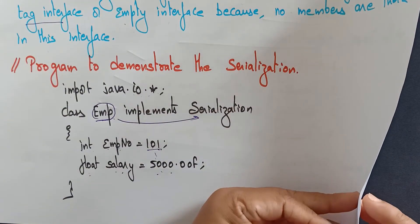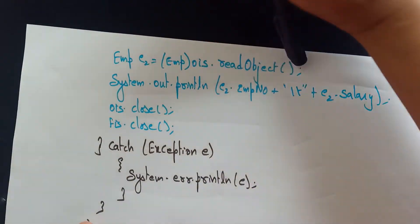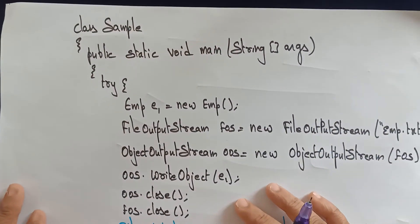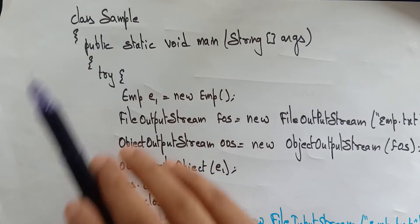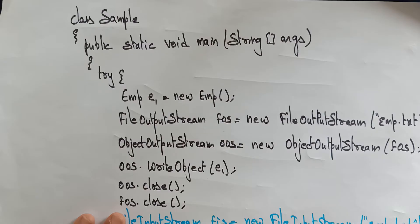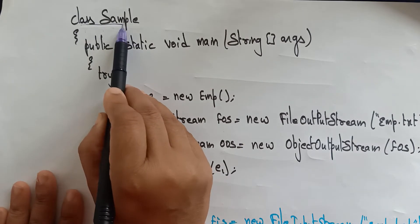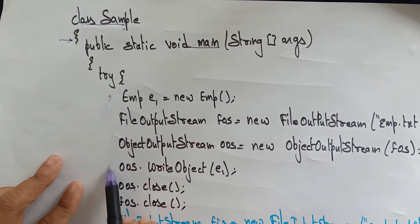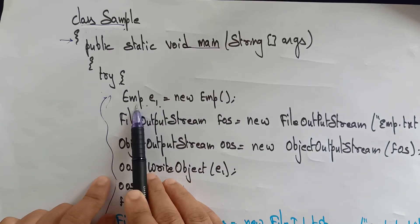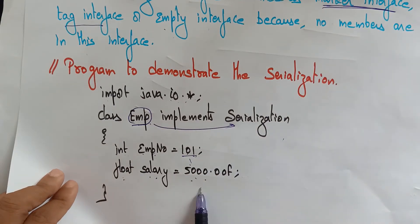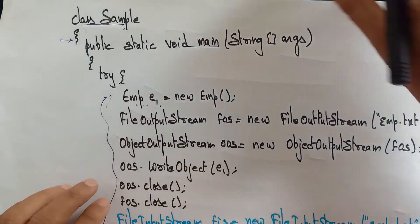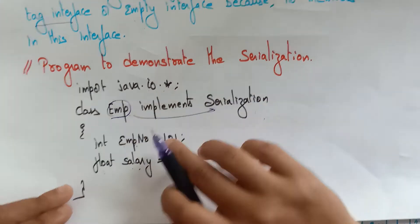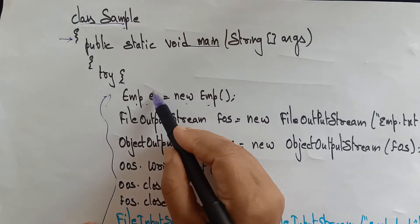So I created class Employee which implements the serialization concept. Now I am creating the main class. A class Sample is created. Class Employee implements Serializable — employee number and salary are initialized. Now class Sample is loaded. While compiling the program, class Sample is loaded, the main method is called, and we enter into the try block. The task is: Employee is the class I already created which implements Serializable. I am creating an object to access this class — with the object reference E1 using new Employee().